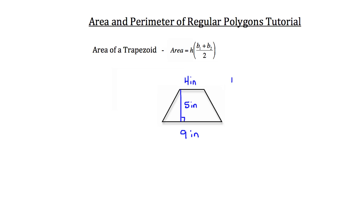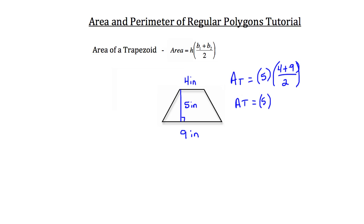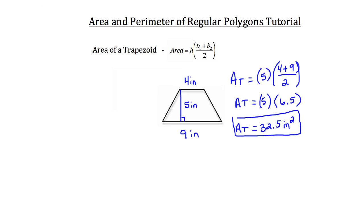You just plug it into the formula. Area of the trapezoid equals the height — in this case five — times the sum of the bases, four plus nine, divided by two. Four plus nine is 13, and 13 over two is 6.5. So the area of this trapezoid is five times 6.5, which equals 32.5 inches squared. That's how you take the area of a trapezoid.